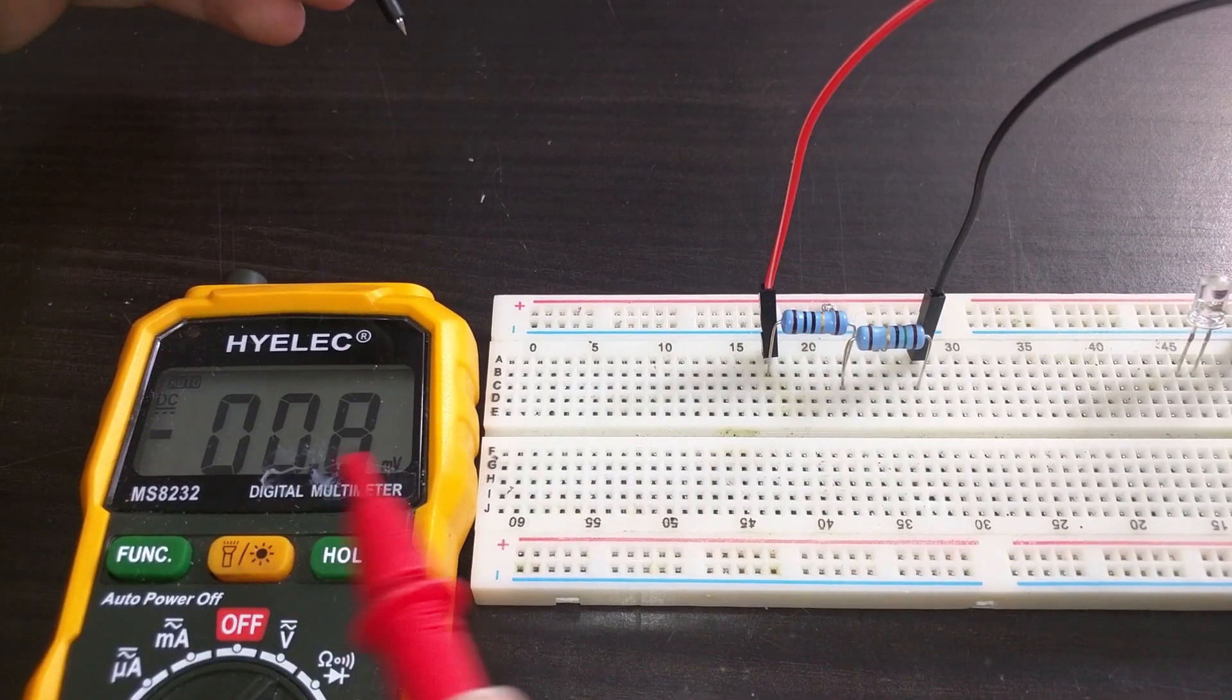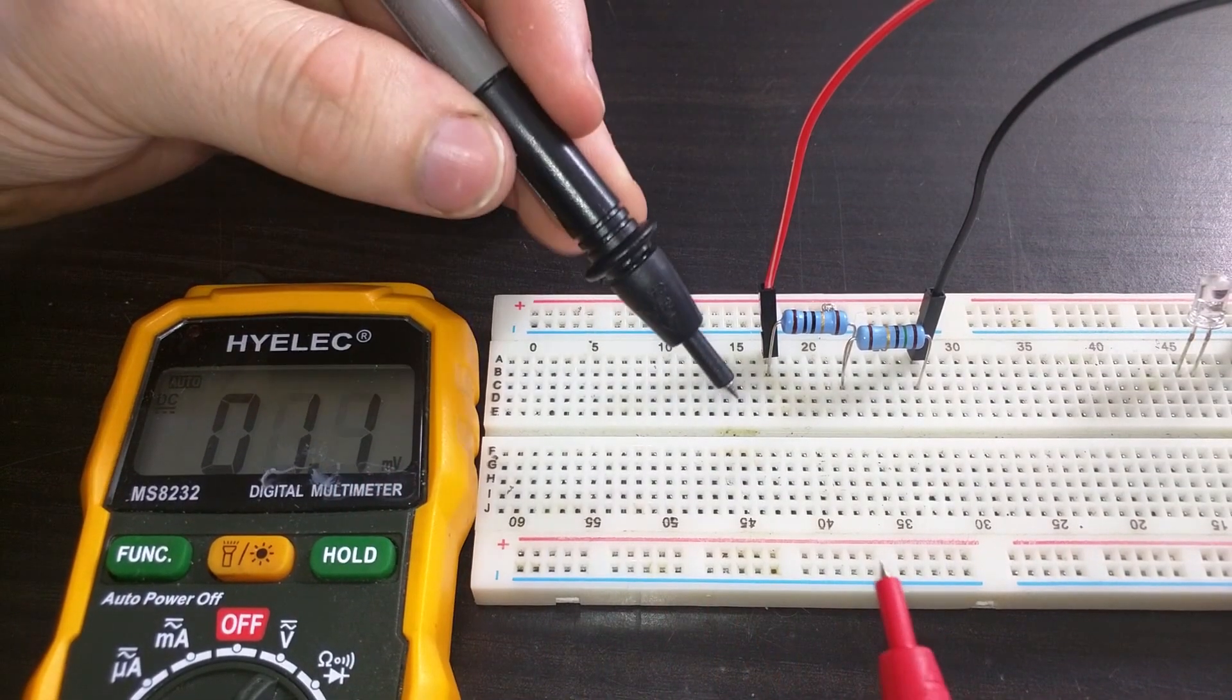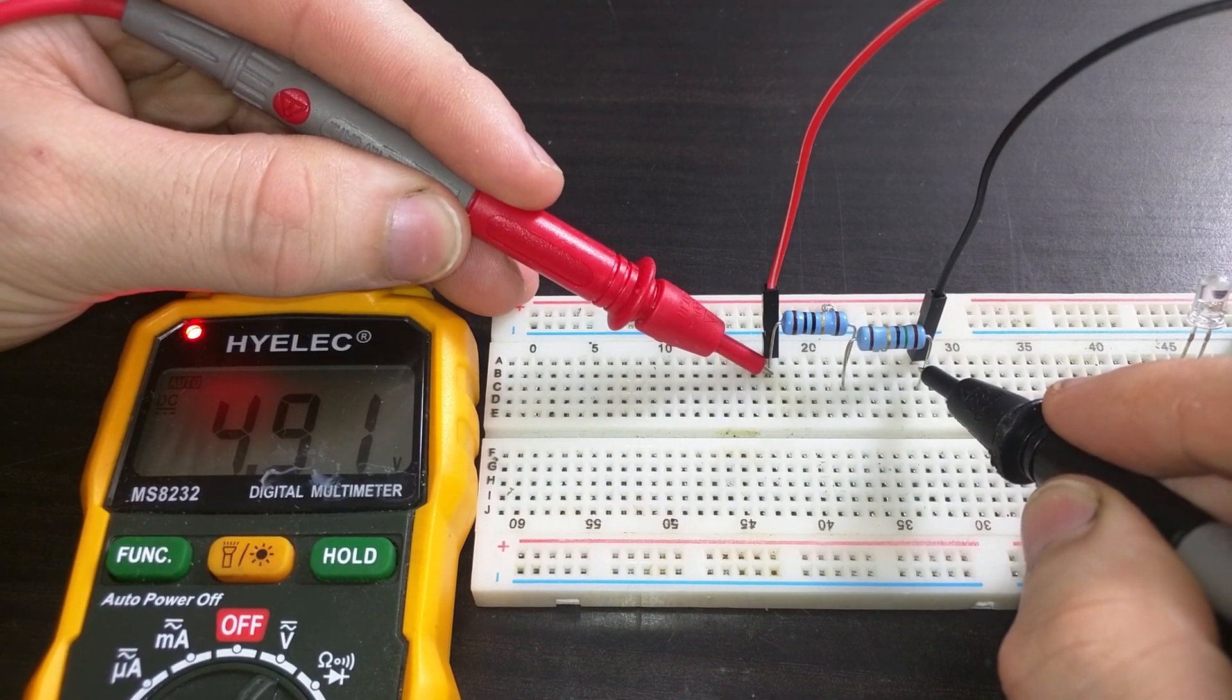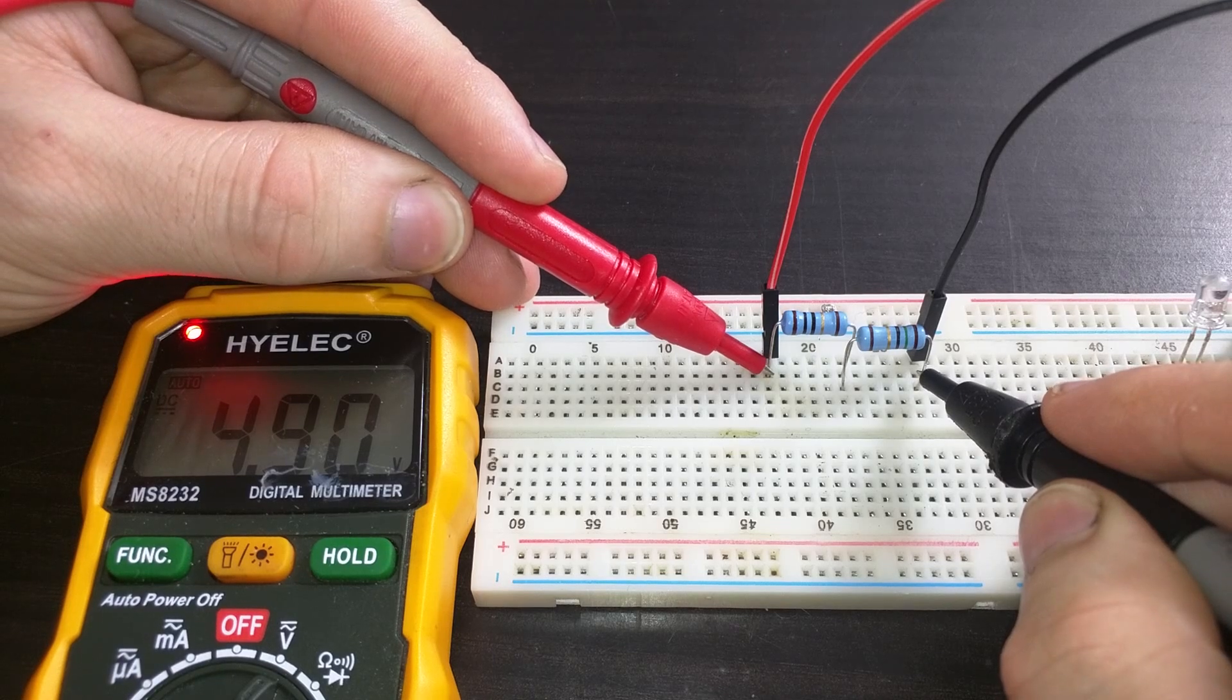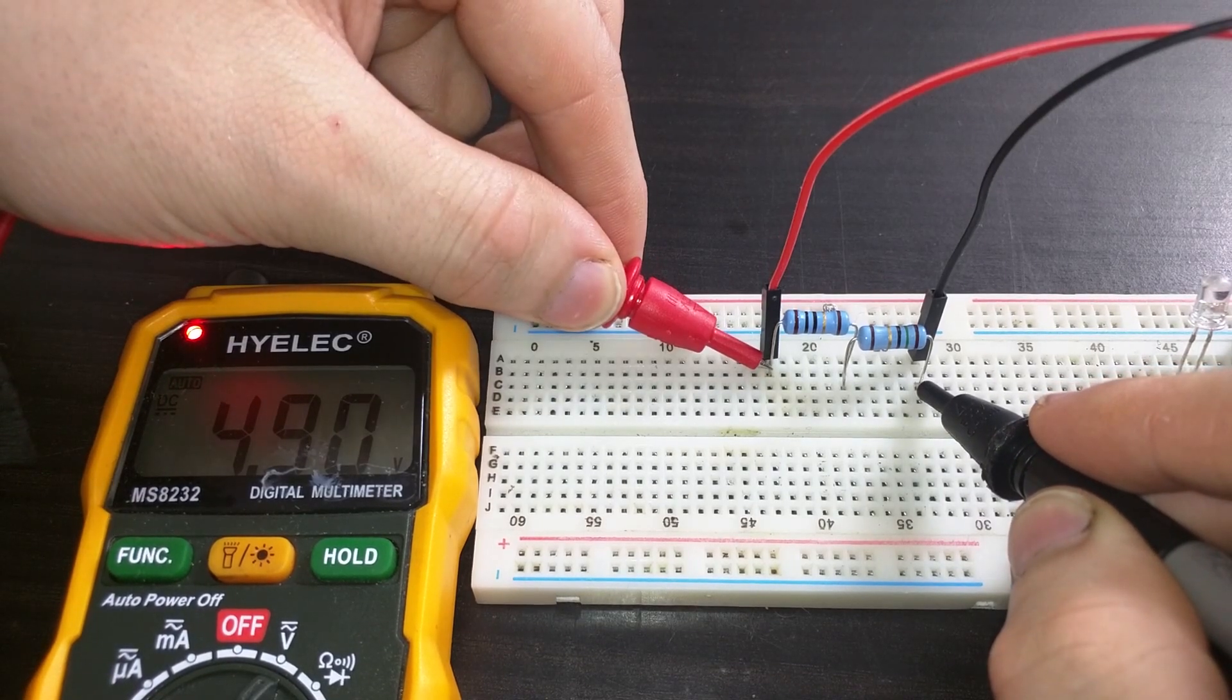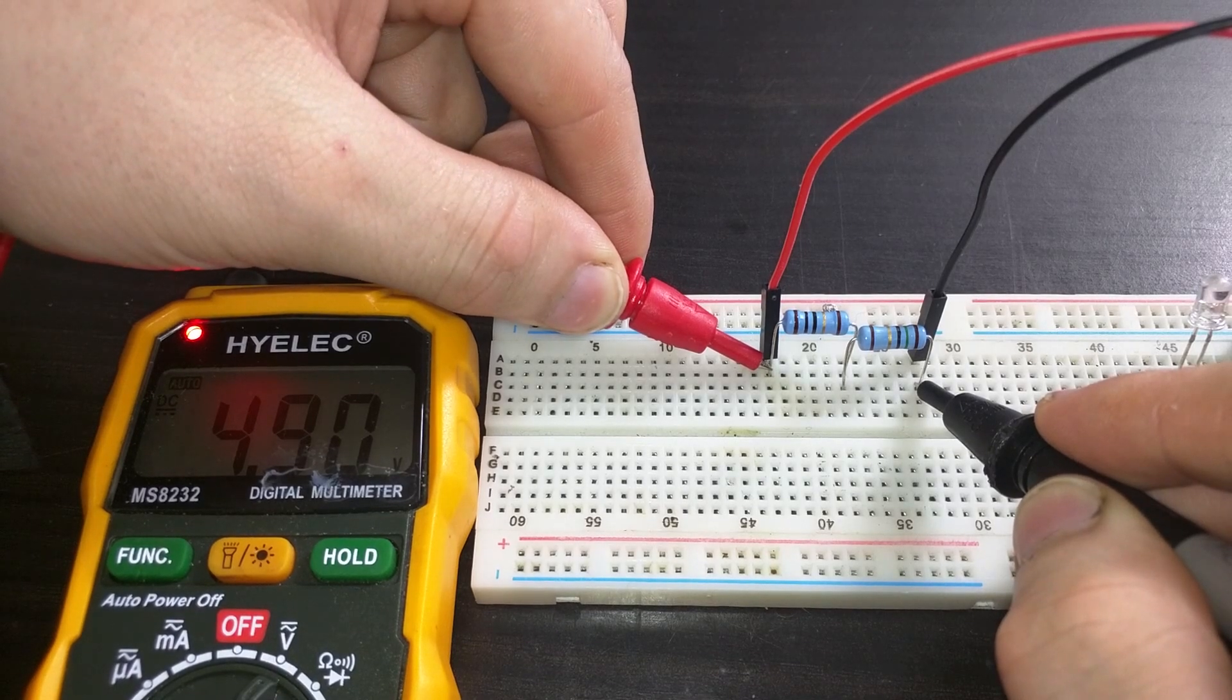Just to demonstrate, I have a voltmeter here which allows me to measure the voltage in the circuit. If I put the voltmeter across both of these resistors, you can see there on the side I've got a total of 4.9 volts.